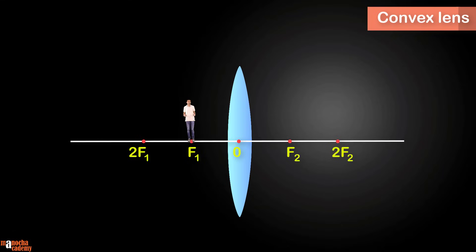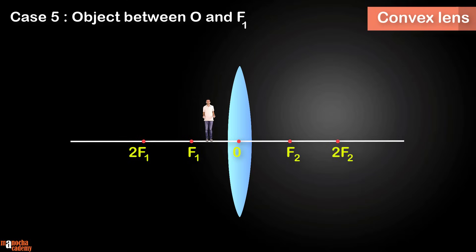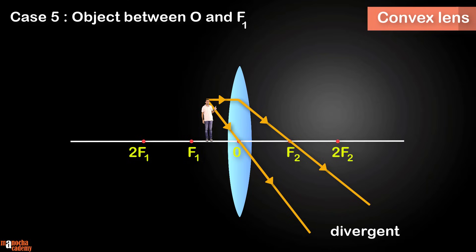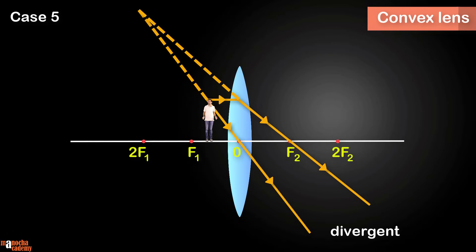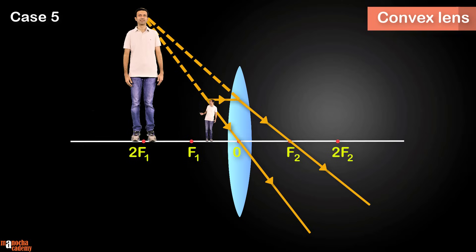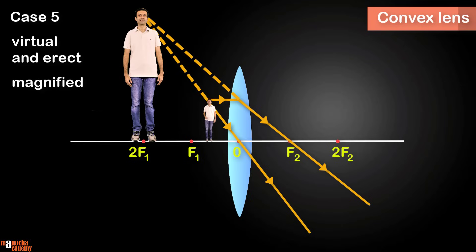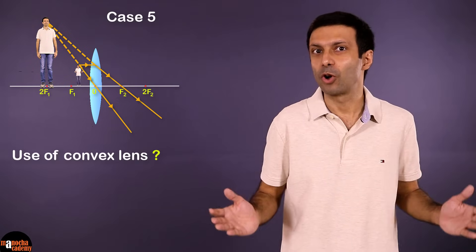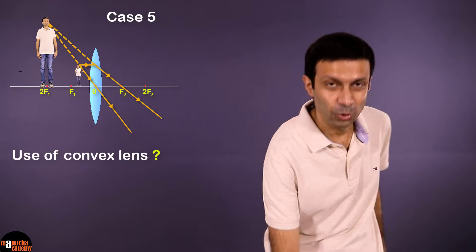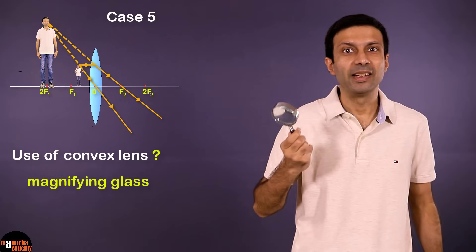Now let's look at the final case where I move really close to the lens. The object — that is me — is between the optical center and the focus of the lens. Using Rule 1 and Rule 2 to draw the light rays from the top of the object, the refracted rays here are divergent, so we need to produce them backwards to obtain our image. The image is magnified. The image is virtual and erect, it's magnified, and it's formed behind the object. A use of the convex lens for this case: it's used as a magnifying glass, like the one used by detective Sherlock Holmes.